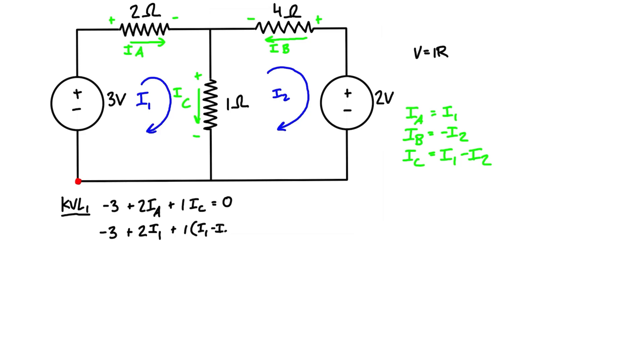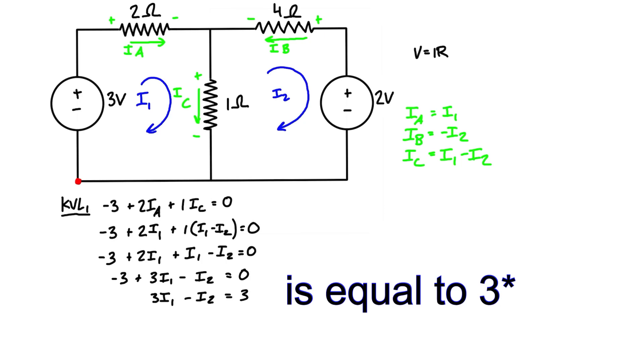And then plus 1 times ic, which is just i1 minus i2. This is i1 minus i2, and that's all equal to zero. We can just simplify this a little bit more and get 3i1 minus i2 is equal to 3. So at this point we have two unknowns, so we need another equation.